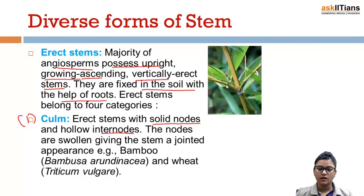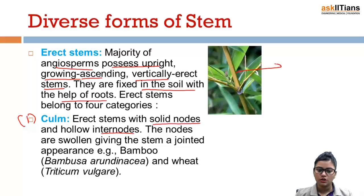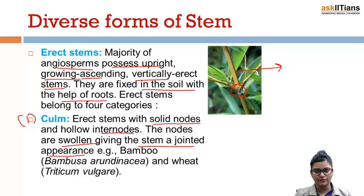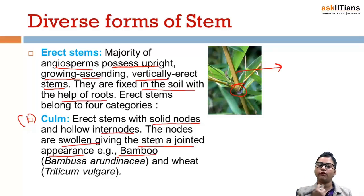The first category is the culm — erect stems with solid nodes and hollow internodes. As you can see in the diagram, the nodes are solid while the internodes are hollow. The nodes are swollen, giving the stem a jointed appearance. Examples are bamboo, which is hollow from inside but has solid nodes, and wheat.